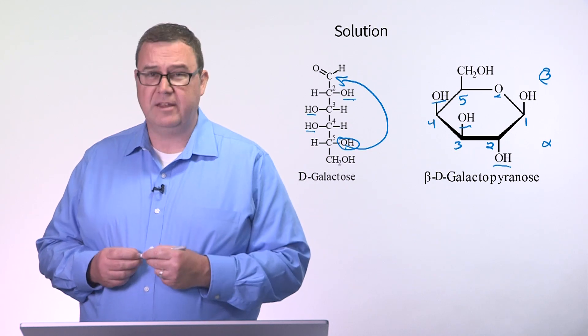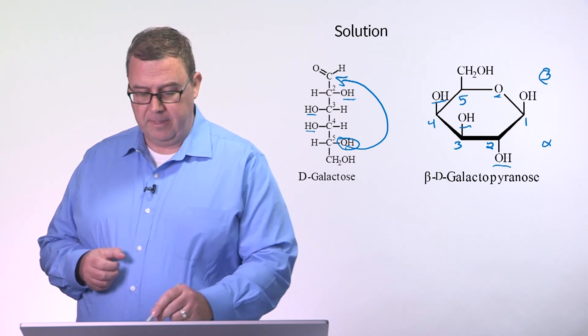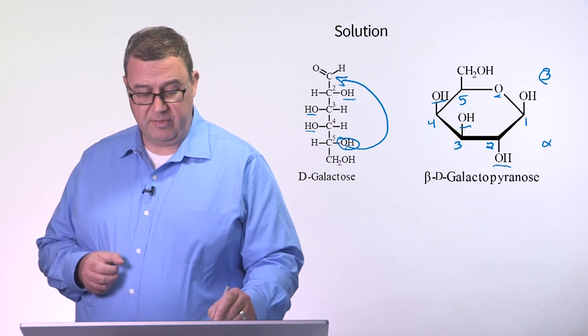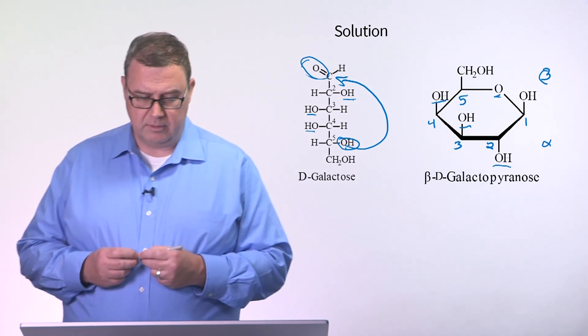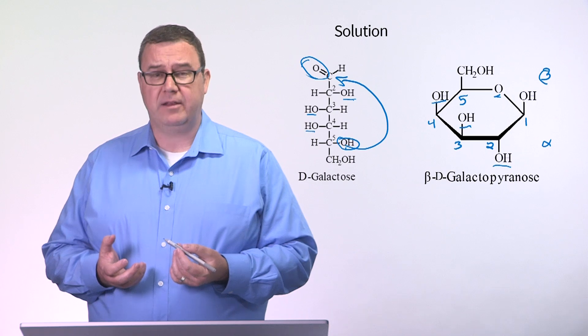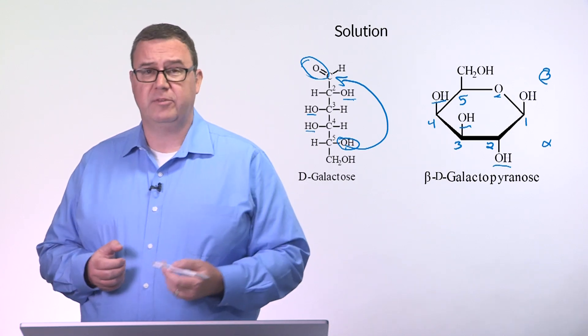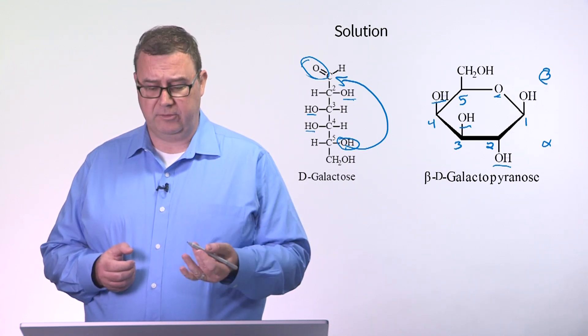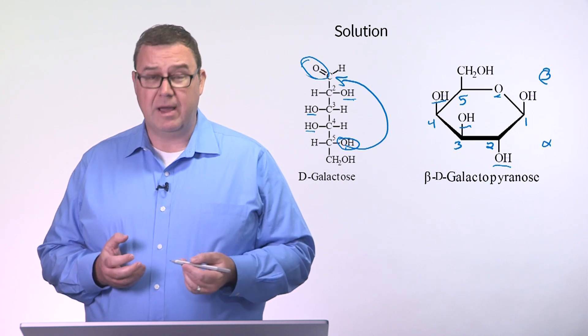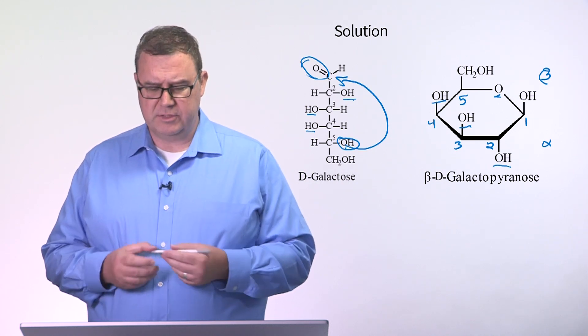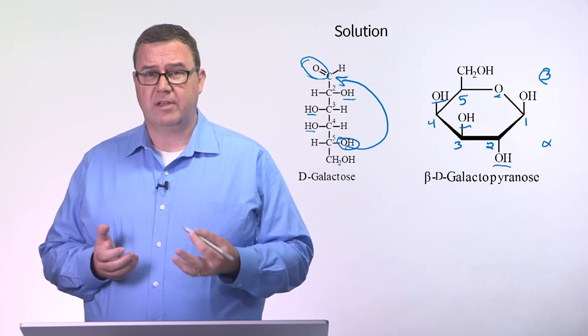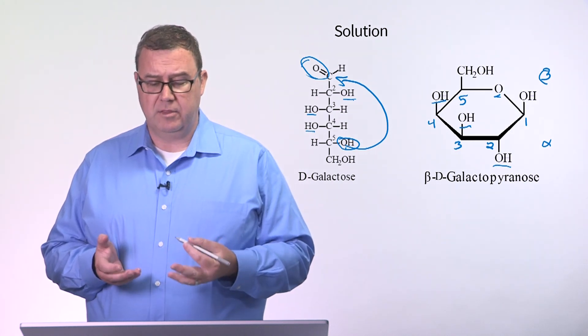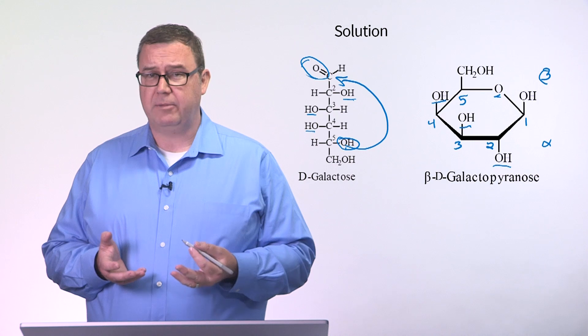We're told this is beta-D-galactopyranose. This hydroxyl group is coming from this oxygen, the former aldehyde oxygen. When we're told this is the beta designation, it means the hydroxyl group is on that beta face, or top face of this ring. Keep in mind that structures like this can readily open and close, and so isomerization between the beta and alpha molecules will happen quite frequently.